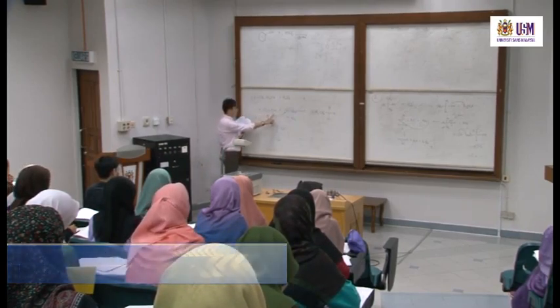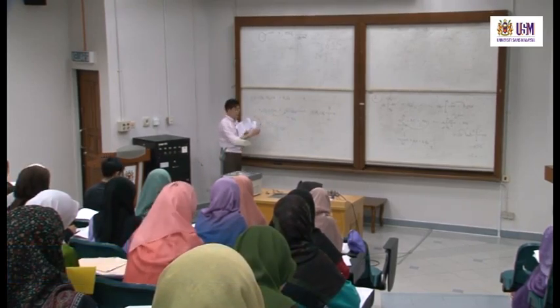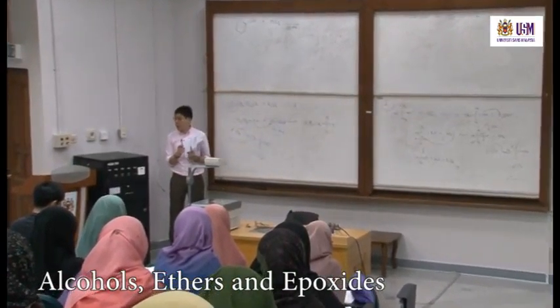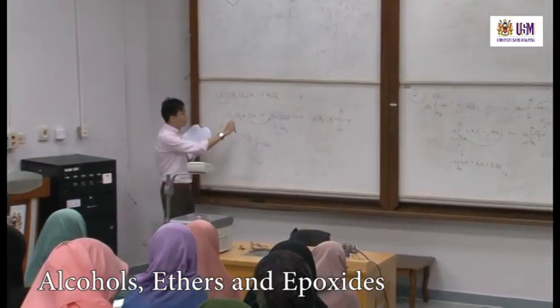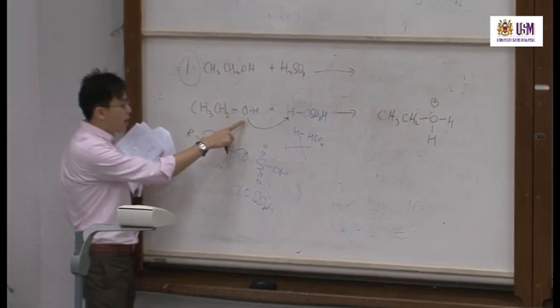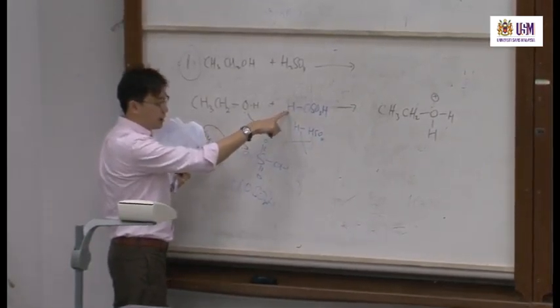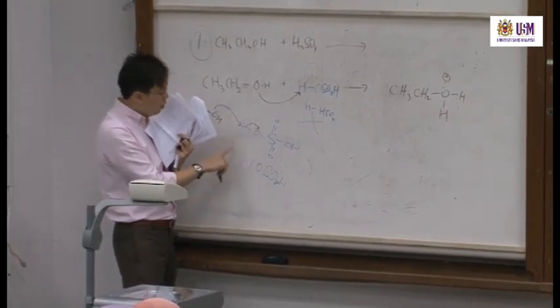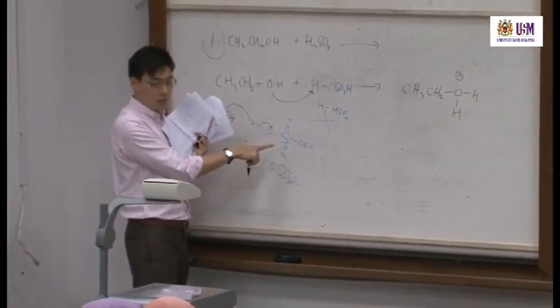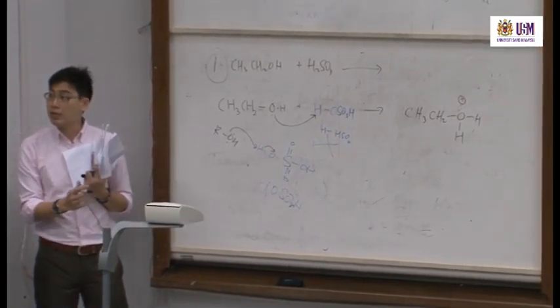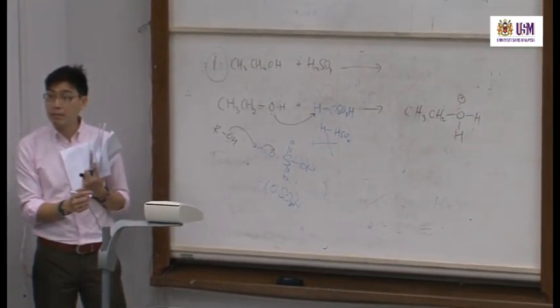When you draw out the curly arrow — this is what we call a curly arrow — it must come from a lone pair or a negative charge. Now you have two lone pairs; you can start from here or start from there, it's the same. Then the lone pair will attack the H here. It cannot attack O, and it will also not attack S, because H is more electro-positive.